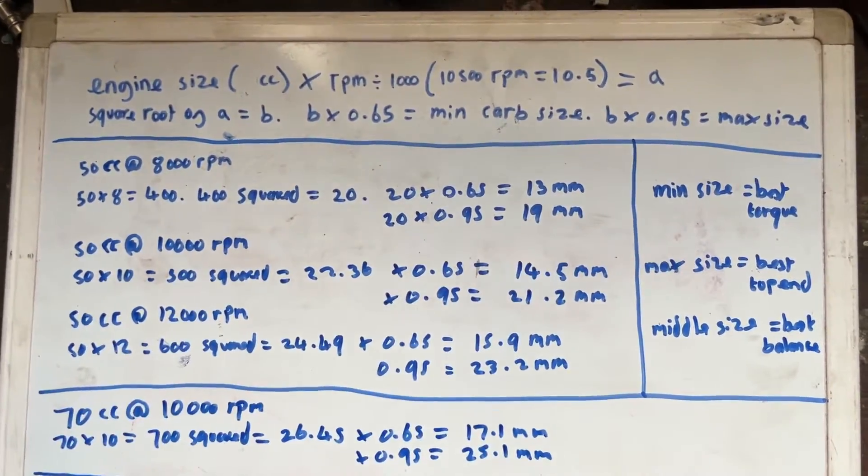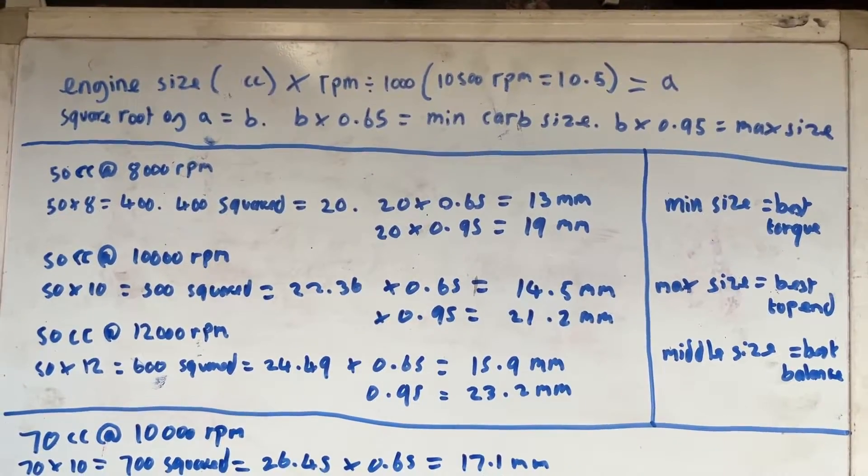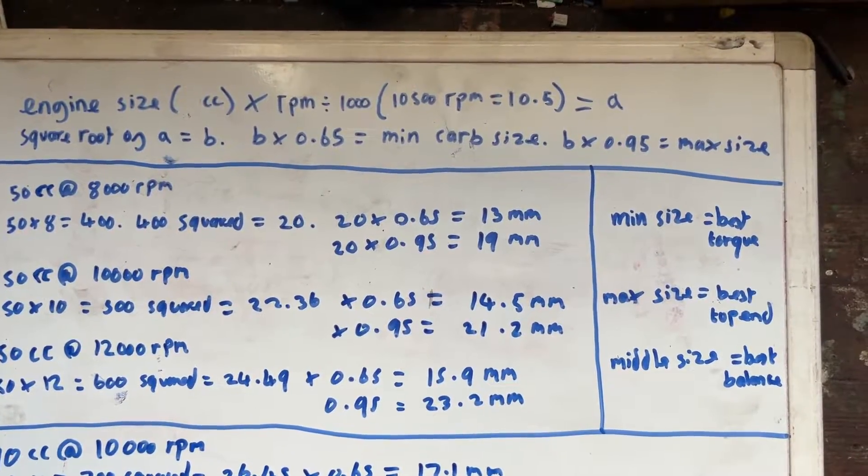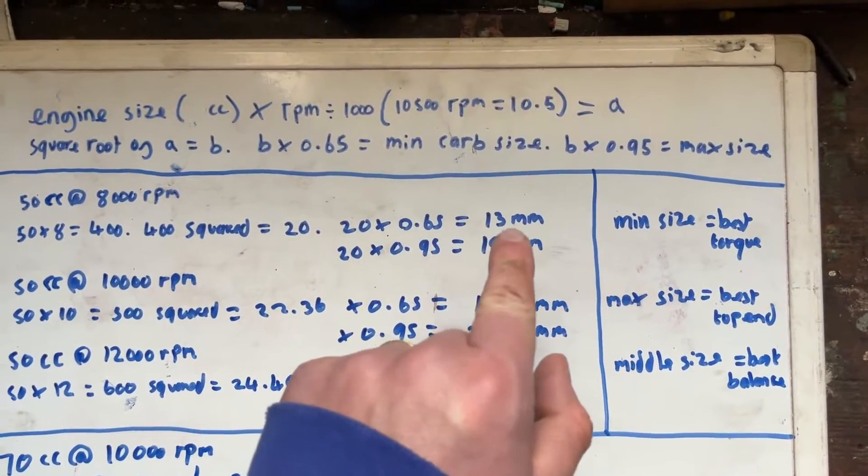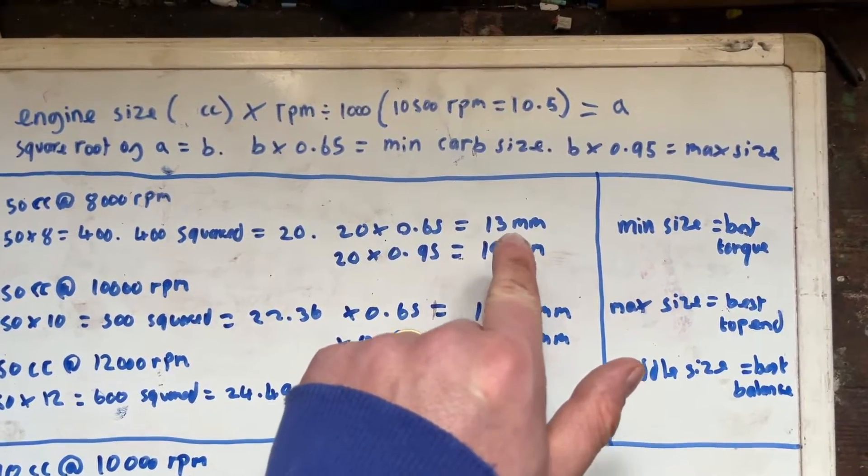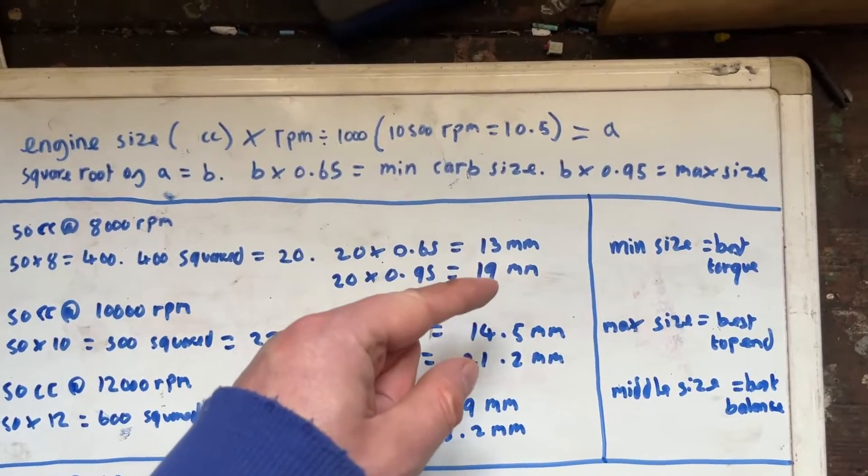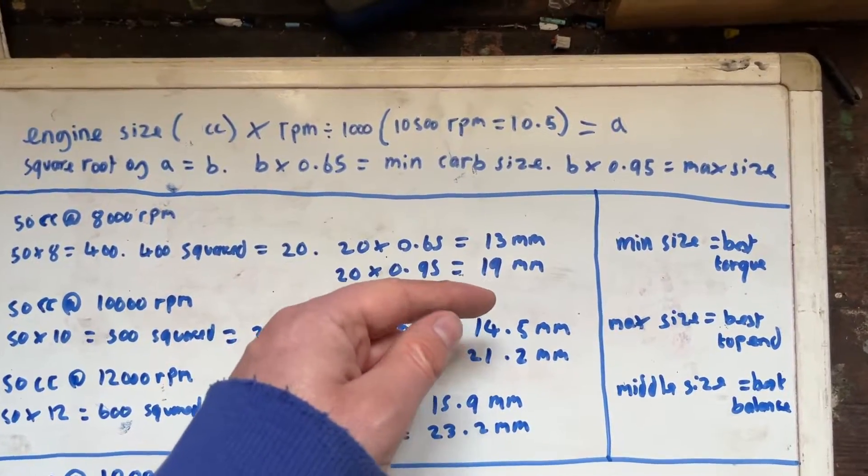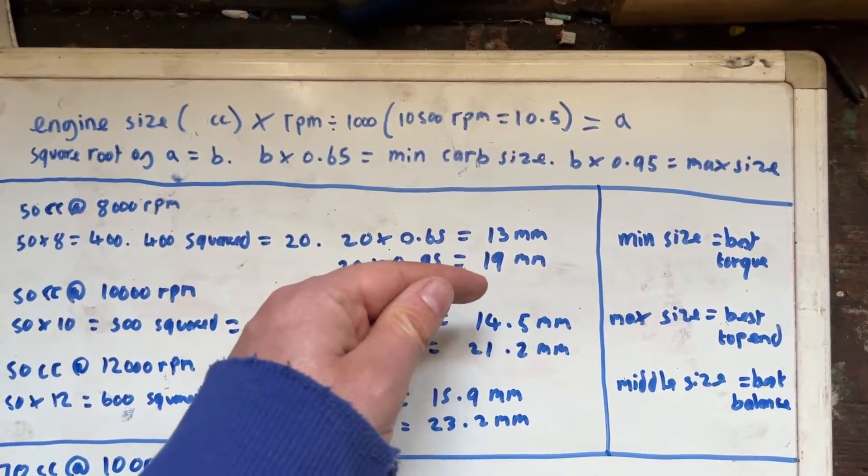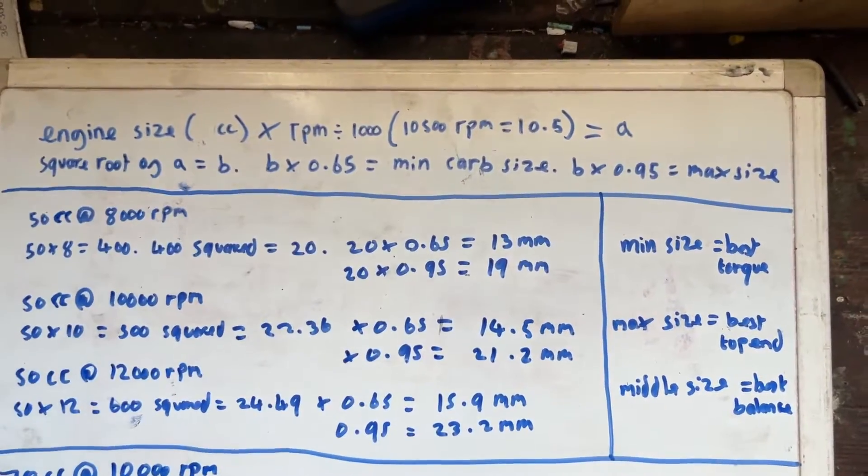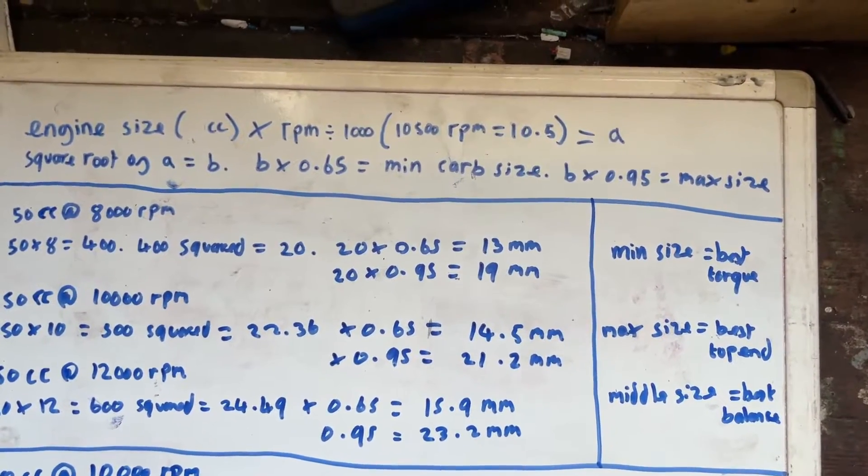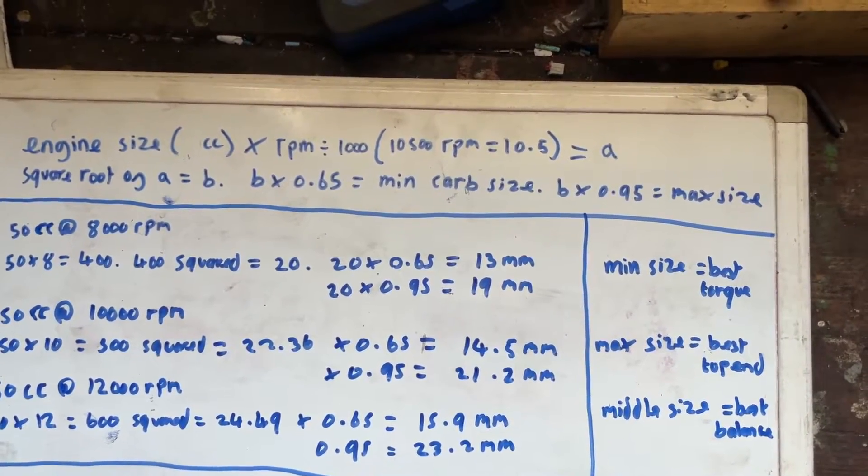So now what we can do, depending on what we want out of the scooter, we can choose our carburetor. If we're interested in all out top speed and not too much about the initial low down power, we'd pick the 19 millimeter because that will give us the most top end but with a slightly reduced bottom end. If we wanted more torque, more bottom end power, we'd choose the 13 millimeter which would have slightly less top end power but the best possible low end power. And if we want the best of both worlds, so basically a balance, we'd choose something in the middle or something around about 15 or 16 millimeters.